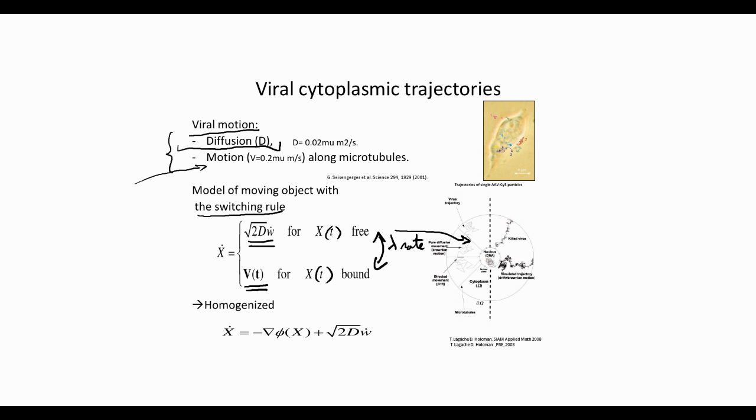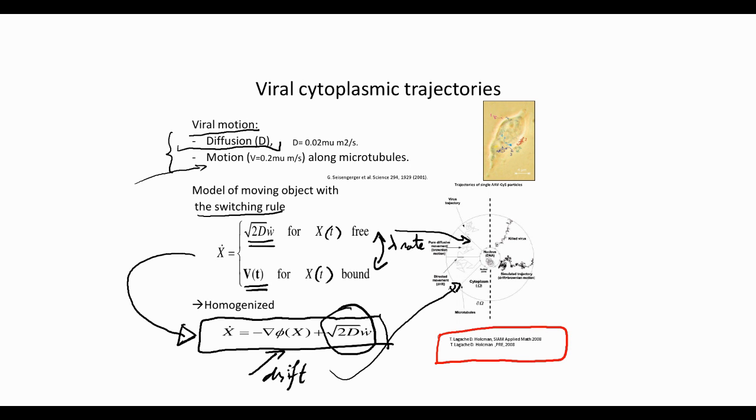This process can be homogenized, and we will not discuss that here. That is, this switching law can be replaced or approximated by an homogenized stochastic differential equation with a drift that depends on the geometry of the organization of the microtubules and a stochastic term. For references, those are the references.